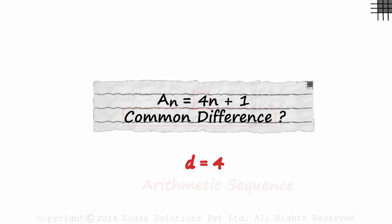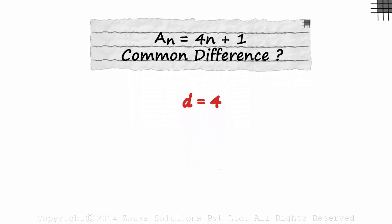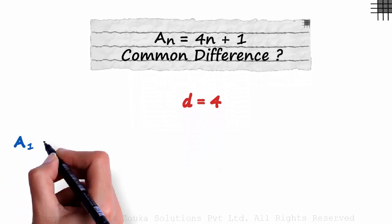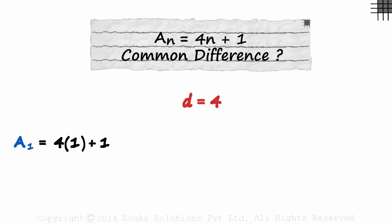n is the term number. Another way in which we can find the common difference is by finding the first few terms. The first term will be A₁. Its value will be 4 times 1 plus 1, that is 5. The first term of this sequence is 5.